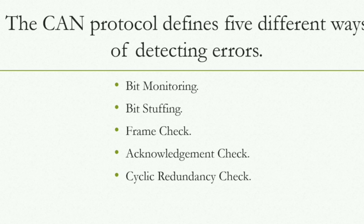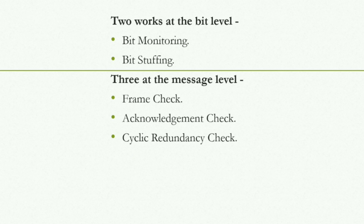There are exactly five techniques that CAN defines for detecting errors: bit monitoring, bit stuffing, frame check, acknowledgement check, and cyclic redundancy check (CRC). These are the five mechanisms for detecting errors. These five mechanisms are further categorized into two categories: bit level and message level.